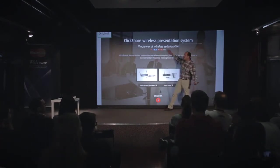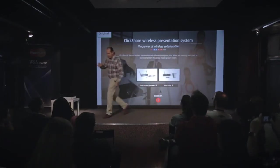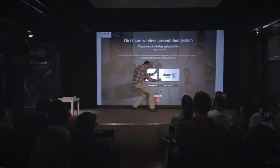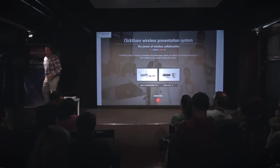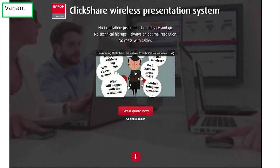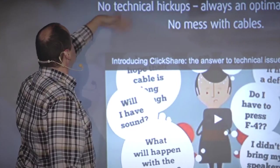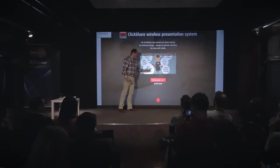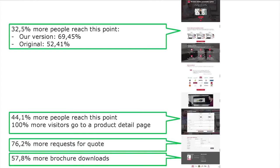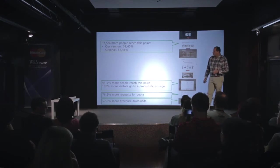The page was asking people to share on every network — not what you want when someone is looking for a meeting room solution. And then there was just a product shot. So we made some small changes: we highlighted the main positive points — no installation or technical hiccups, no mess with cables — and we put a one-minute video we found on their website. The result was pretty incredible: 32 percent more people started scrolling. Once people scroll they continue scrolling, so at the end of the page we had 44 percent more people reading that section, 100 percent more going to the product detail pages, 76 percent more request for quotes, and 50 percent more brochure downloads.